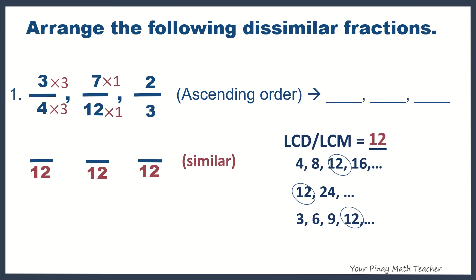Now, next, 7 twelfths, of course, you have to multiply both by 1. For 2 thirds, you have to multiply 3 by 4 to get 12. And do the same with the numerator. So, we get 9, 7, and 8 as our new numerators.